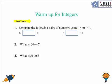Question number 1 says: compare the following pairs of numbers using greater than or less than sign. We know that 0 is less than 8 and 15 is greater than 12. For question number 2, what is 34 and 45? If we add up both the numbers, the answer would be 79.